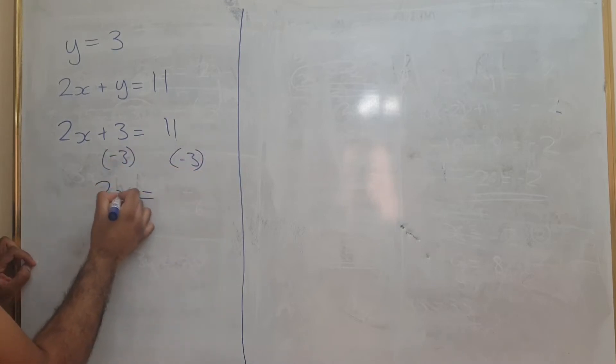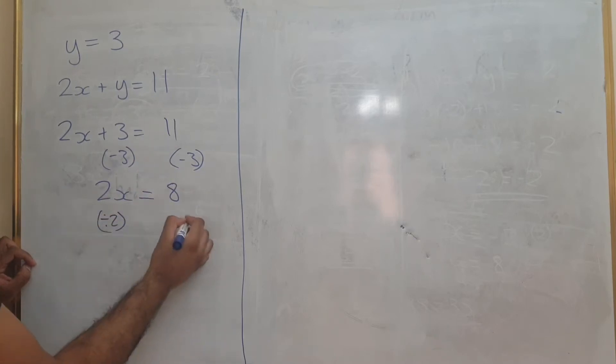And you get 2x equals 11 minus 3 which is 8. And then you can divide by 2 to get the answer of x equals 4.